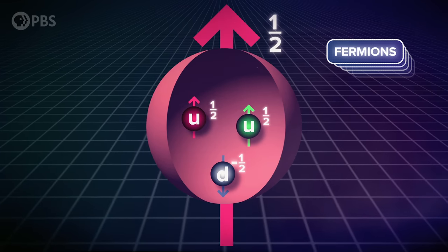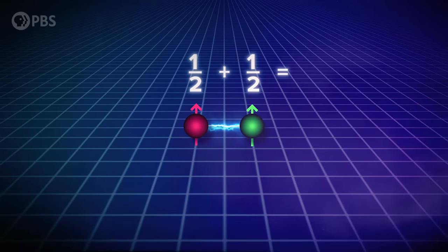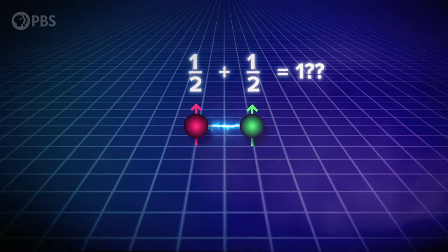so it's a fermion. But what if we could connect just two spin-half particles? That would give us a total spin of one, which is an integer, and so it should produce a boson.